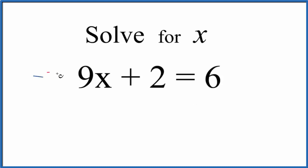We could subtract 2 from both sides, add a negative 2 to both sides. As long as we do something to both sides, we're good. It hasn't changed anything. So 2 minus 2 is 0, and we end up with 9x equals 4.